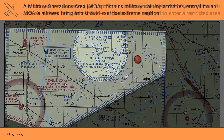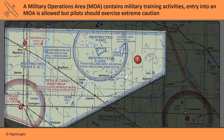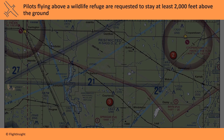A military operations area, or MOA, contains military training activities. Entry into an MOA is allowed, but pilots should exercise extreme caution. Down here's a wildlife refuge — pilots flying above a wildlife refuge are requested to stay at least 2,000 feet above the ground. Notice it says requested, not required. These areas are designated for wildlife where the authorities are trying to keep disturbances to a minimum, but it's only a request for aircraft to stay above 2,000 feet.